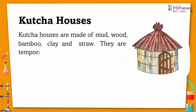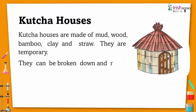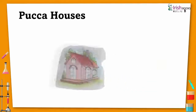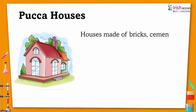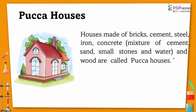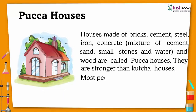Kacha houses are temporary. They can be broken down and rebuilt easily. They are also called huts. Paka houses are made of bricks, cement, steel, iron, and concrete. They are stronger than kacha houses. Most people in cities and towns live in paka houses.